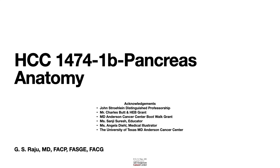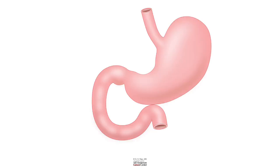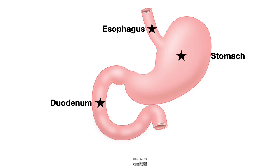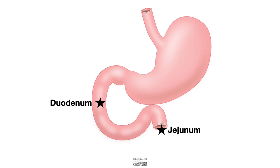Greetings. Let us learn about the anatomy of the pancreas. Before we go there, let us recap the anatomy related to the pancreas first. What we have learned is: this is the esophagus, stomach, duodenum, and jejunum. The demarcation between the duodenum and jejunum is known as the duodenojejunal flexure.